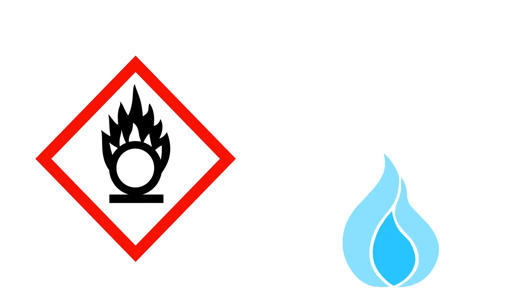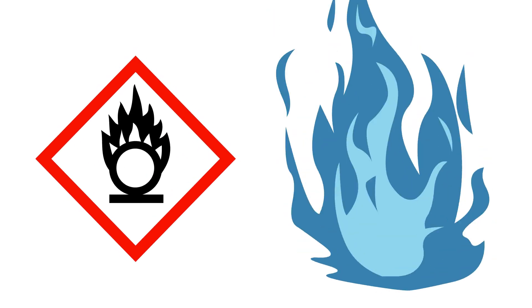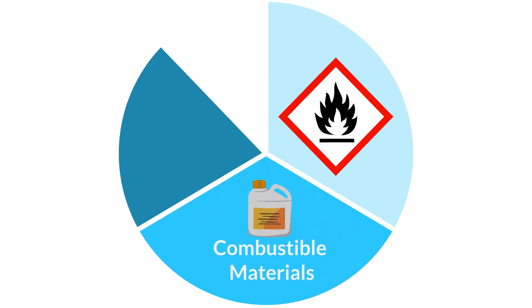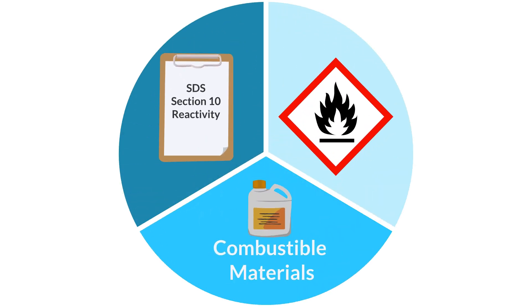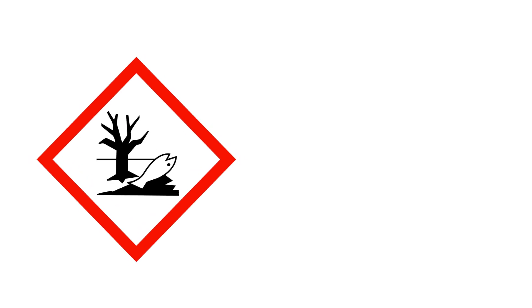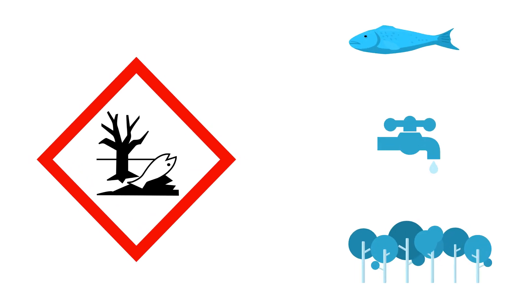The oxidation symbol is used on substances that can cause or intensify fire. The critical hazards are flammable and combustible materials and conditions listed in Section 10. Other considerations are listed in Section 7 and 8 of the SDS.